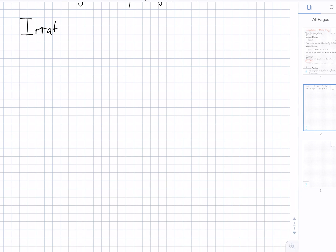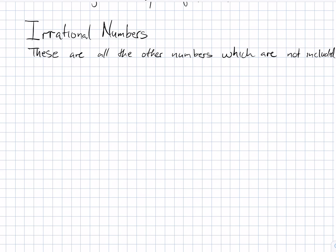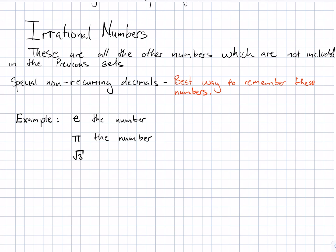The next set of numbers are the irrational numbers. These are all the other numbers which are not included in the previous sets. To remember them, I always say that they are special non-recurring decimals. Examples include the number e, the number pi, the square root of 3, the square root of 5, and the square root of 2. The list goes on.